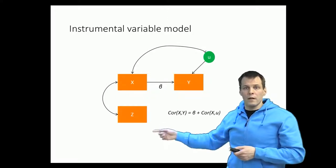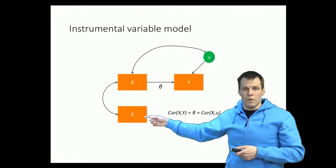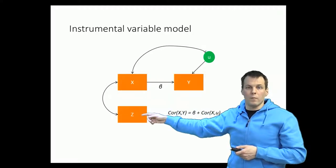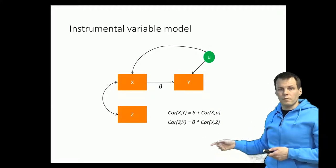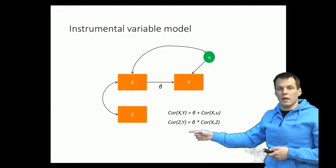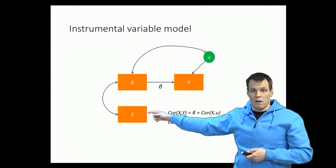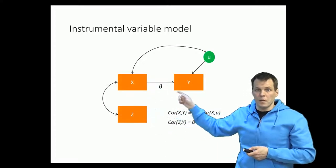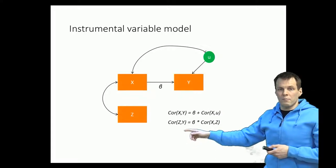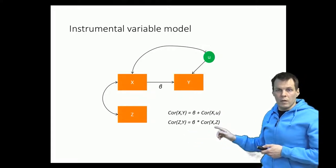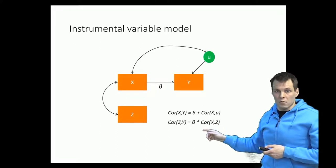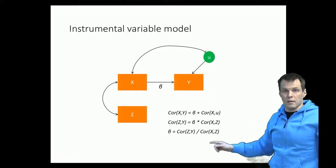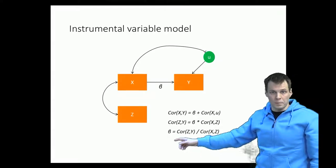Assuming we have a valid instrumental variable such that the only reason z and y are correlated is because z is correlated with x, then z can't be correlated with y directly. The correlation between z and y equals beta times the correlation between x and z, from the path analysis tracing rule. From here we can solve for beta using the correlation between x and z and the correlation between z and y, which are both observable quantities, giving us a consistent estimate of beta.